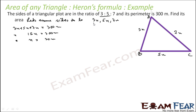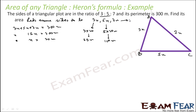If x is 20 meters, then 3x = 60 meters, 5x = 100 meters, and 7x = 140 meters. So the actual sides are 60 meters, 100 meters, and 140 meters. Now I have all the sides and can easily find the area.